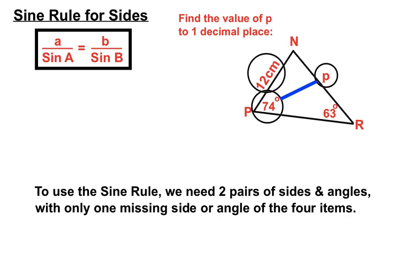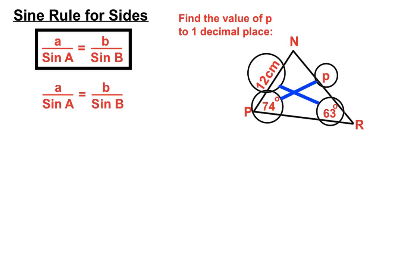The side of 12cm is closely related to its opposite angle. So we have two pairs of sides and angles with only one missing — that p is the only one missing; we have three out of the four things. If they're opposite each other, we can work with the Sine Rule. Let's see the steps. We're going to put the numbers from this question into the Sine Rule arrangement.